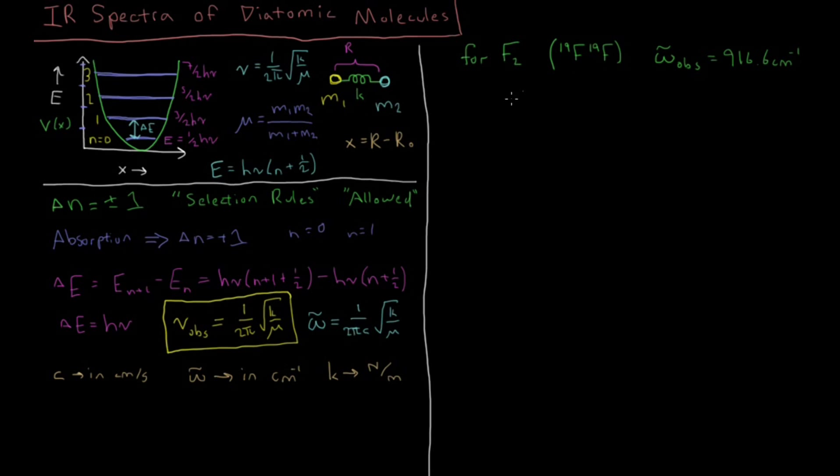So for fluorine, the observed frequency of vibration is 916.6 inverse centimeters or wave numbers. So what we want to do here is we're going to derive what the spring constant is under the harmonic oscillator approximation for F2. So we have omega bar. We have this equation down here and we're going to try to get K by itself. So first we're going to square it.